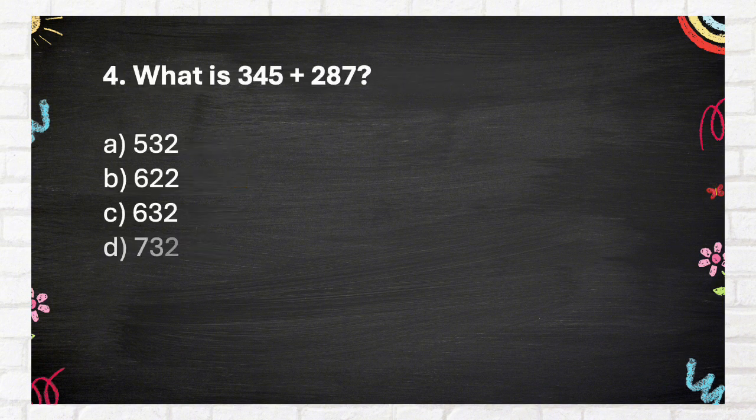Question number 4. What is 345 plus 287? Again, what is 345 plus 287? A. 532. B. 622. C. 632. D. 732.